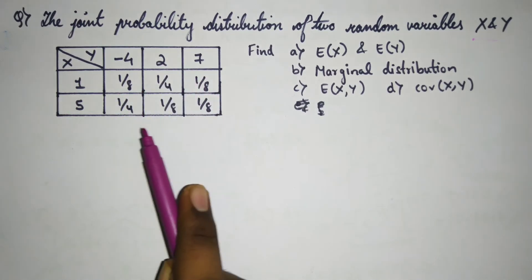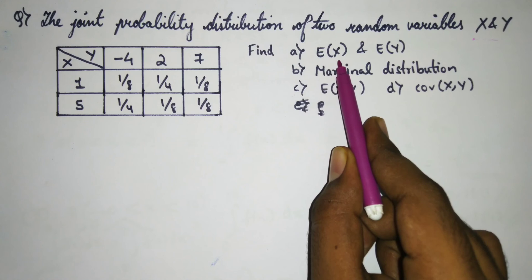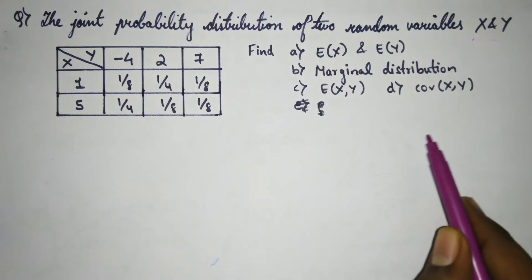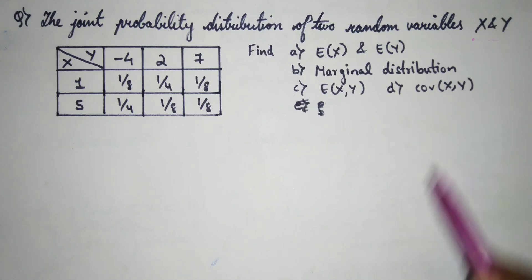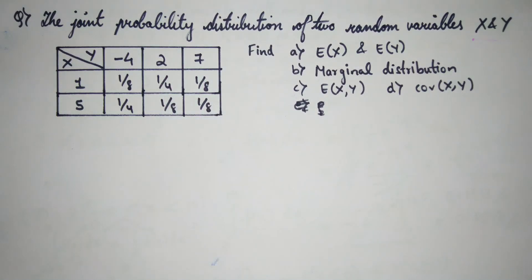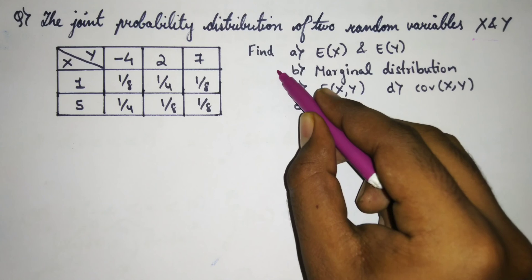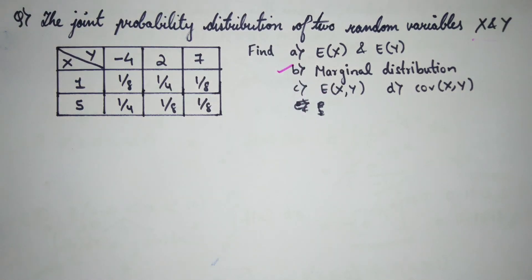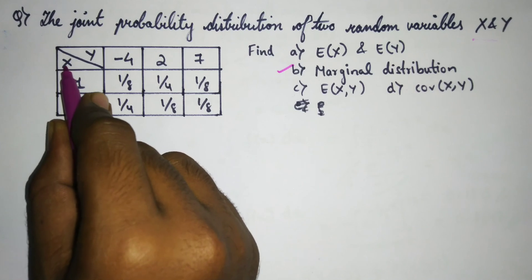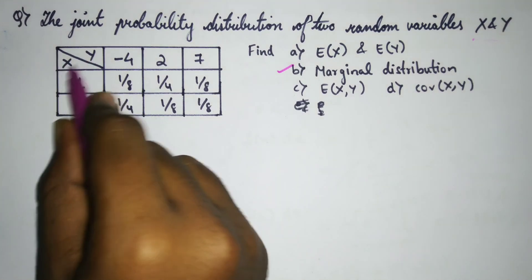We need to find E(X), E(Y), marginal distribution, E(XY), and covariance of X and Y. The first thing we can do is finish the marginal distribution part. I'll draw the marginal distribution table. Note that both X and Y are present.